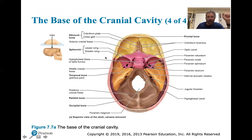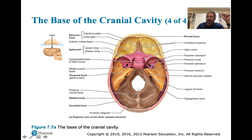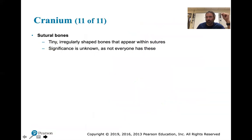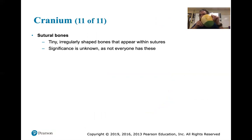Here's another superior-to-inferior view. Get your orientation - anterior, posterior. Start thinking: the frontal area is here, this is posterior, lateral is over here, ears are over here, sinuses here, eyes here. Don't just try to memorize the picture - orient yourself to what's going on. There are also sutures between bones, and small sutural bones that appear within sutures; their significance is unknown as not everybody has them.